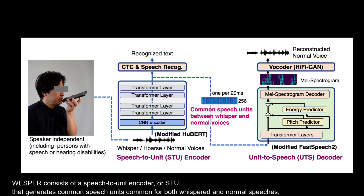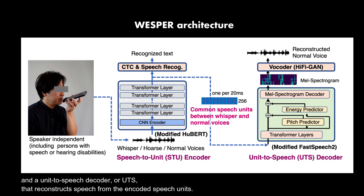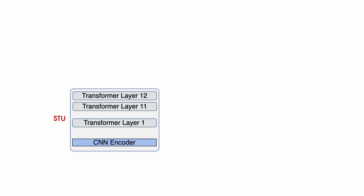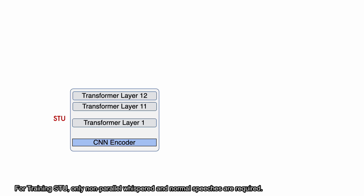WESPER consists of a speech-to-unit encoder, or STU, that generates common speech units for both whispered and normal speech, and a unit-to-speech decoder, or UTS, that reconstructs speech from the encoded speech units. For training STU, only non-parallel whispered and normal speeches are required.